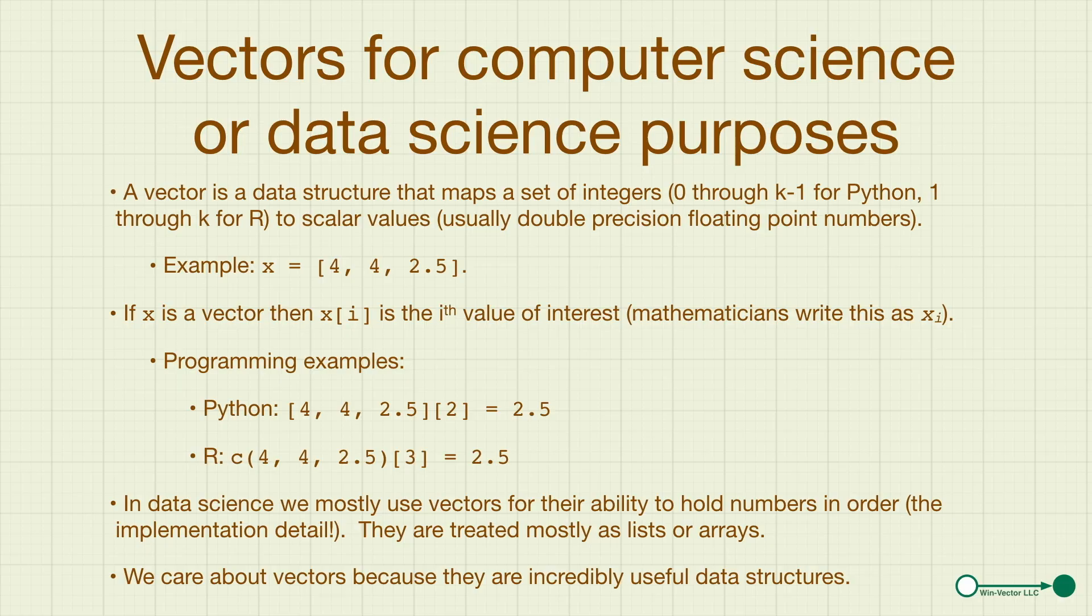So let's take a completely implementation operational view of vectors. To a computer scientist, a vector is just a mapping from an interval of integers to some floating point values. This is an overly specialized definition, and it puts the vector very near the data structures that often implement it, which would be the list or array data structures.